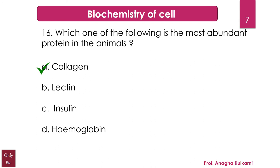Collagen is found in tissues such as cartilage, bones, tendons, ligaments, and skin. Gelatin used in the food industry is nothing but irreversibly hydrolyzed collagen. Lectins are carbohydrate-binding proteins highly specific for sugar groups that cause agglutination of particular cells or precipitation of glycoconjugates and polysaccharides. Insulin is a hormone, and hemoglobin is a conjugated protein.